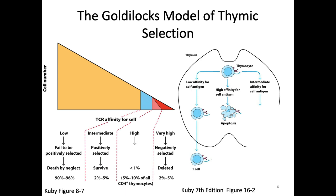If the cell gets no signal or very little signal throughout its time in the thymus, it clearly cannot respond to MHC at all — it's useless. That cell gets no signal to survive and undergoes death by neglect. We also say that cell fails positive selection. Sometimes we describe this as: neglect the useless.